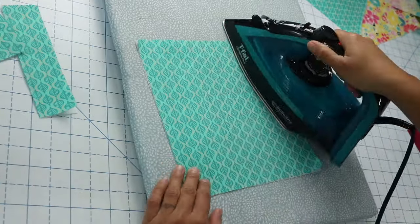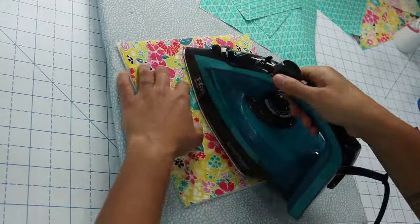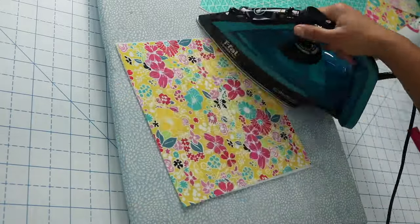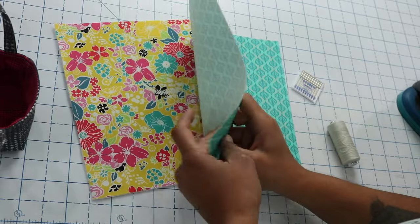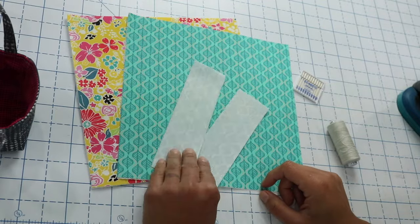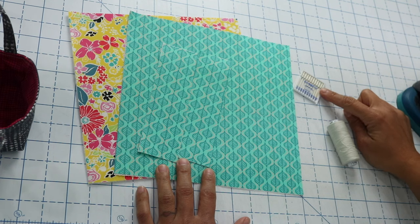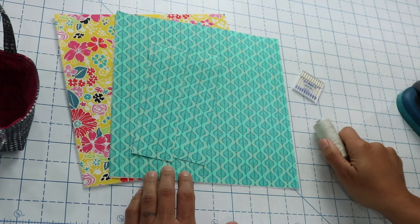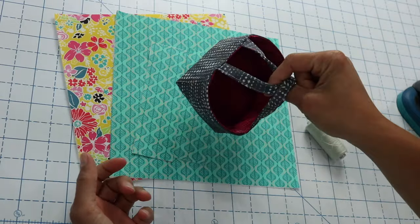Then grab your iron and ironing board, fuse all the fabrics to their corresponding interfacing pieces following manufacturer's instructions, and we're ready to start. All right y'all, exterior fabric is prepped. So is the lining and the two strips that we're going to use for the handles. Put in a size 80/12 universal sewing machine needle in your machine and grab the thread of your choice.